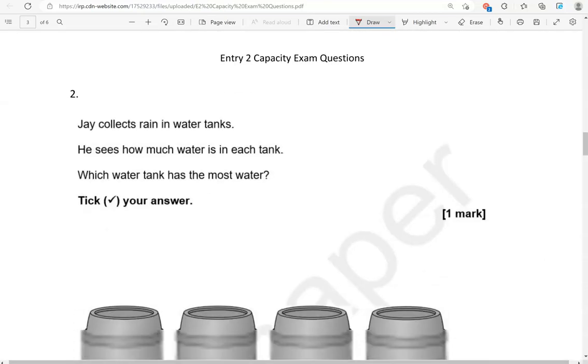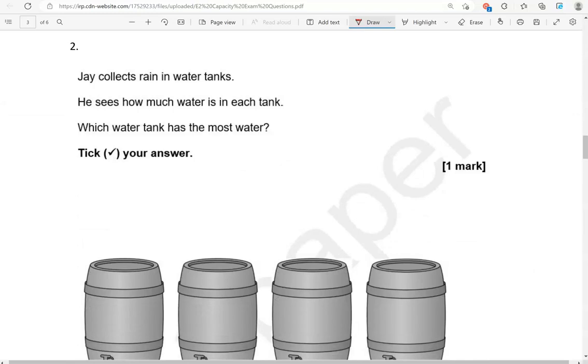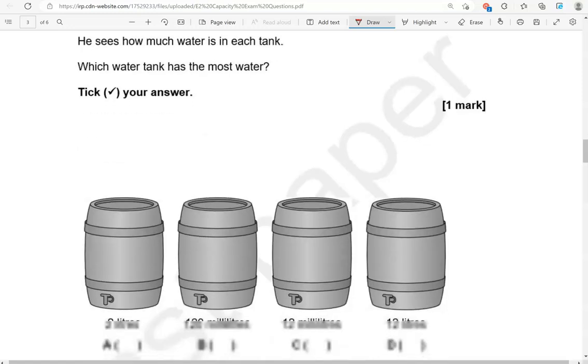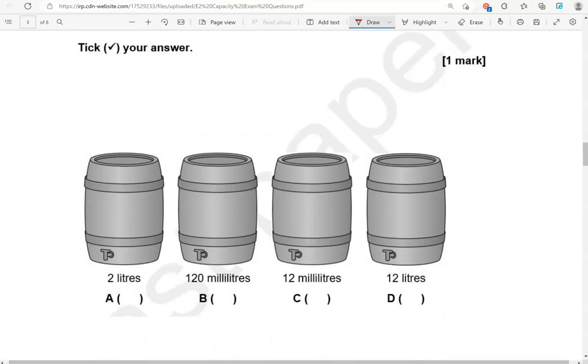In 1 liter, there are 1,000 milliliters. Jake collects rain in water tanks. He sees how much water is in each tank. Which water tank has the most water? Tick your answer. We've got a with 2 liters, b with 120 milliliters, c 12 milliliters, and d 12 liters.